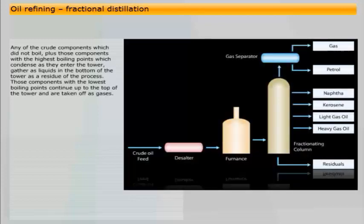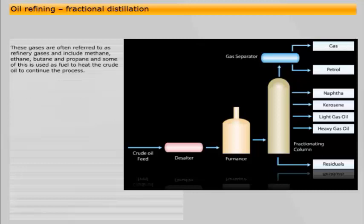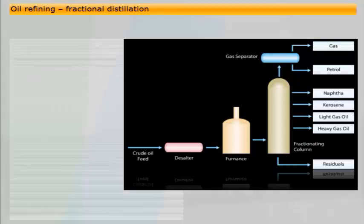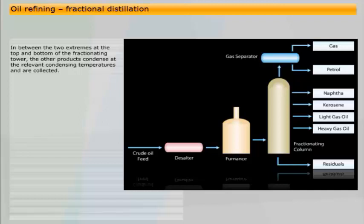Any of the crude components which did not boil, plus those components with the highest boiling points which condense as they enter the tower, gather as liquids in the bottom of the tower as a residue of the process. Those components with the lowest boiling points continue up to the top of the tower and are taken off as gases. These gases are often referred to as refinery gases and include methane, ethane, butane and propane, and some of this is used as fuel to heat the crude oil to continue the process. You will probably recognise some of these gases as they are bottled under pressure and used as a fuel source for portable heating and cooking appliances. In between the two extremes, the other products condense at the relevant condensing temperatures and are collected. The main products include some of the fuels that you will be familiar with.